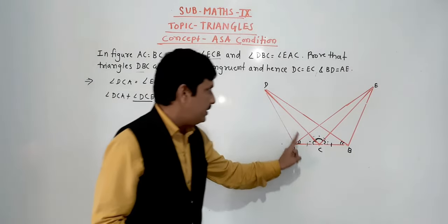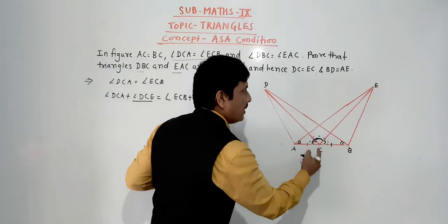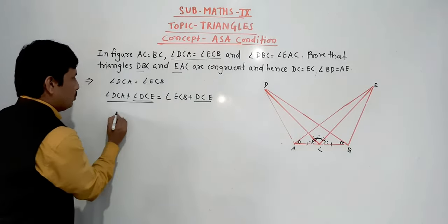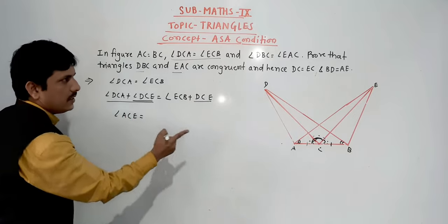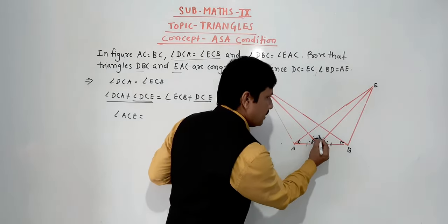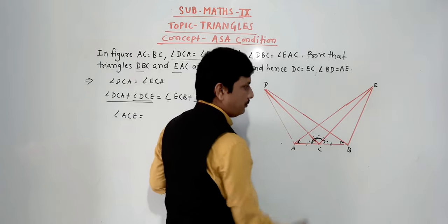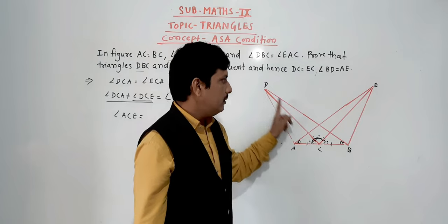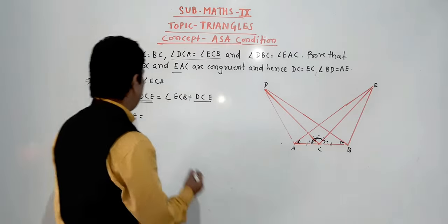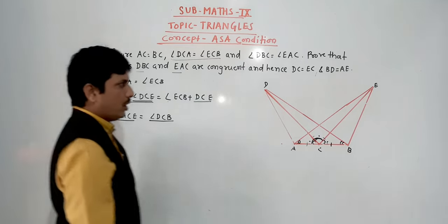DCA plus DCE gives us the whole angle — angle ACB. And ECB plus DCE gives us angle ACD. So: angle ACB equals angle ACD. Now from this, and also AC equals DC which is given, and angle DBC equals angle EAC which is given — we have two angles and one included side for both triangles.